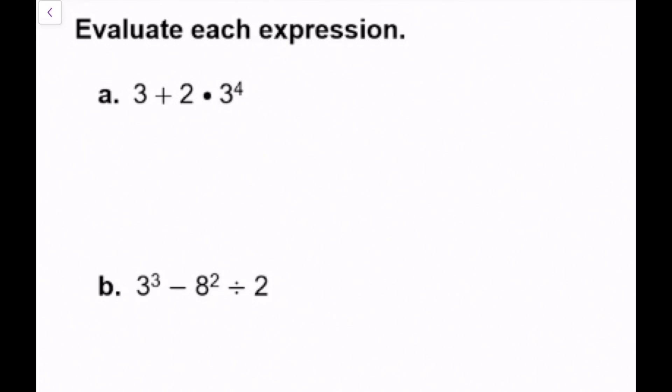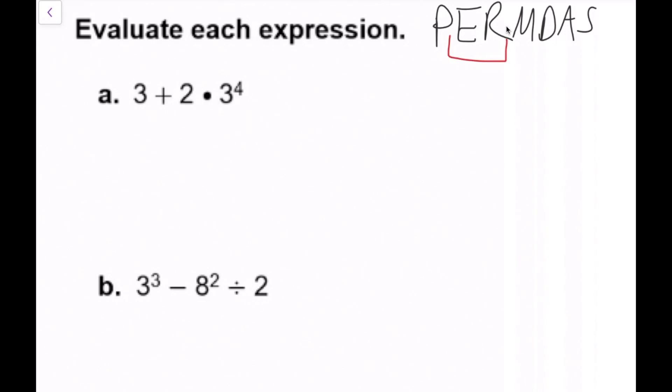Now the instructions say to evaluate each expression with multiple different operations, so we're going to use the order of operations. The acronym is PEMDAS, but if you've seen roots and radicals, I prefer PERMDAS. The P stands for parentheses or any other brackets or grouping symbols. Then we evaluate all exponents and radicals or roots. Then we do multiplication and division from left to right. And then finally any addition and subtraction.